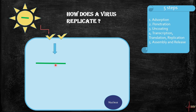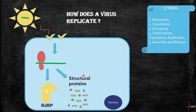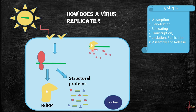Now ribosomes of our cell attach to the RNA and start translating it into different proteins. Many structural proteins are produced, as well as an important enzyme called RNA-dependent RNA polymerase. This polymerase enzyme attaches to the RNA and produces many copies of it.